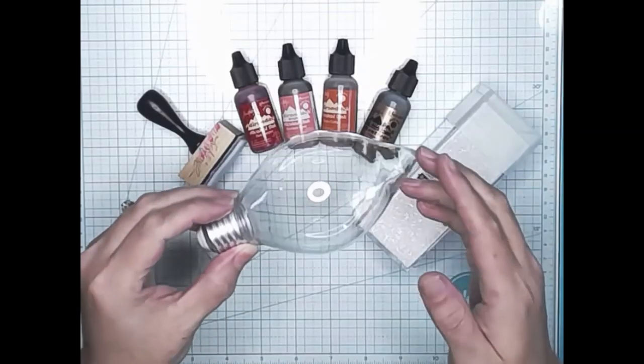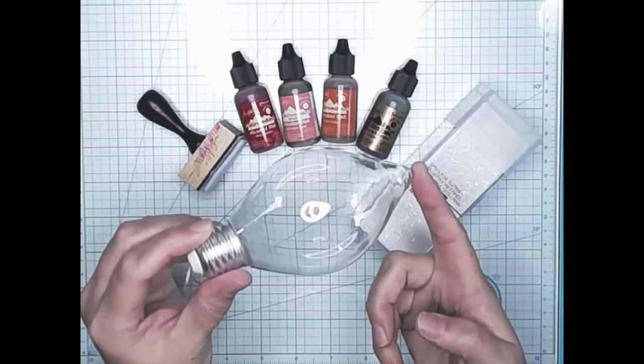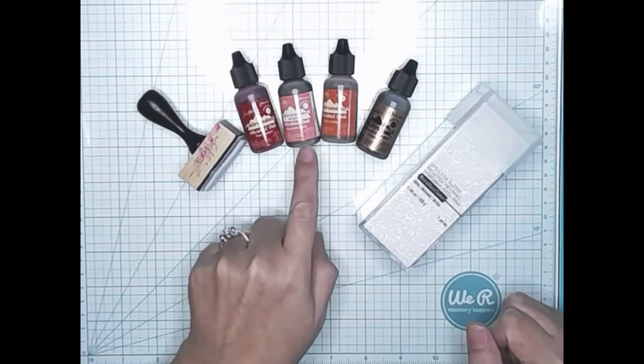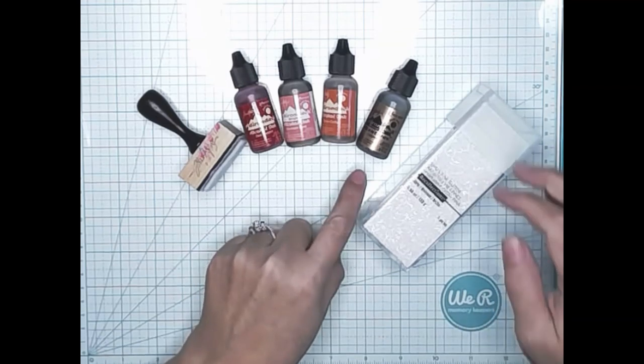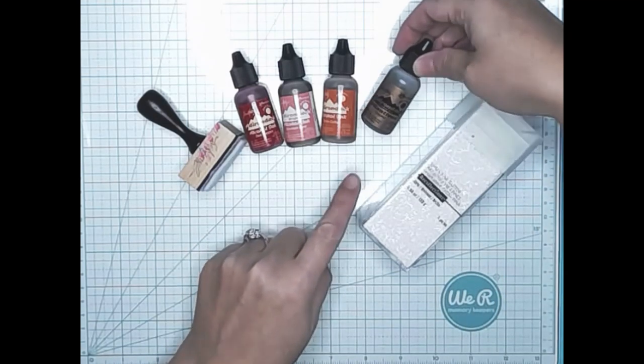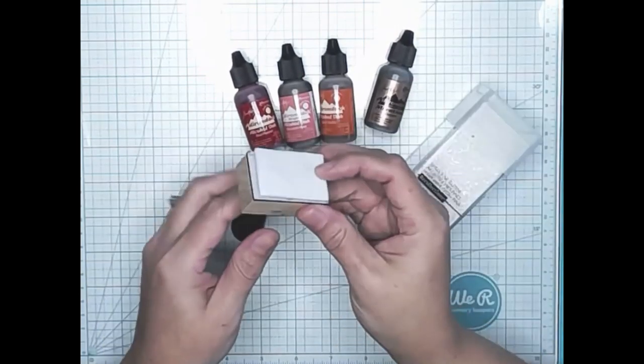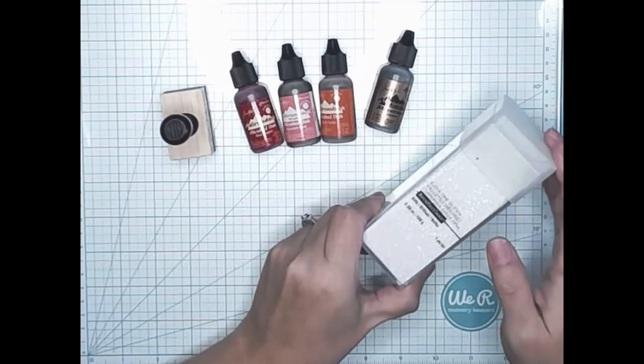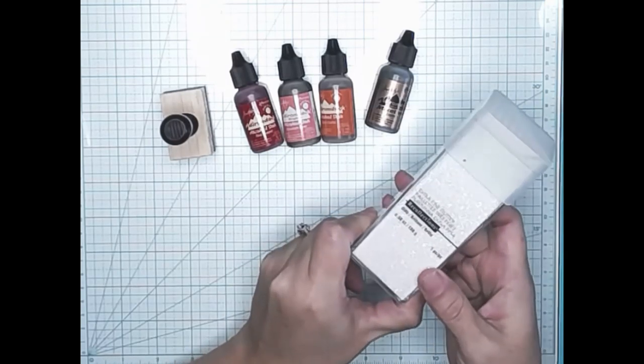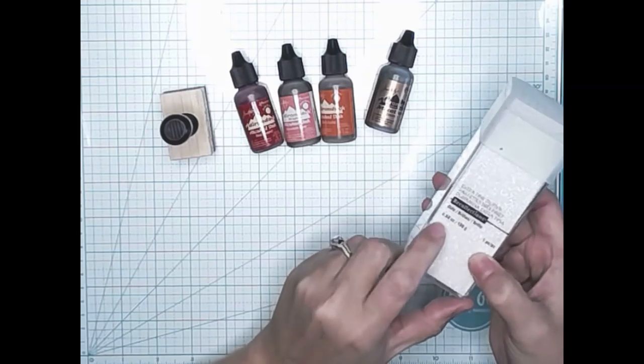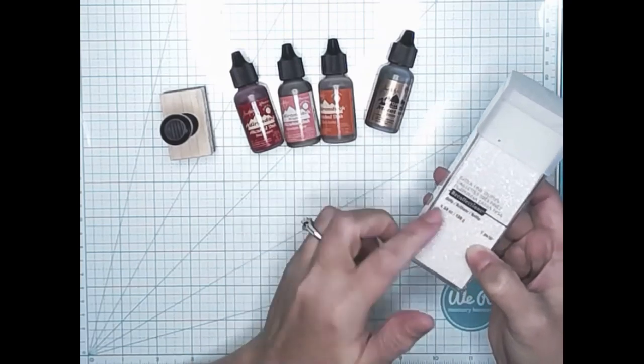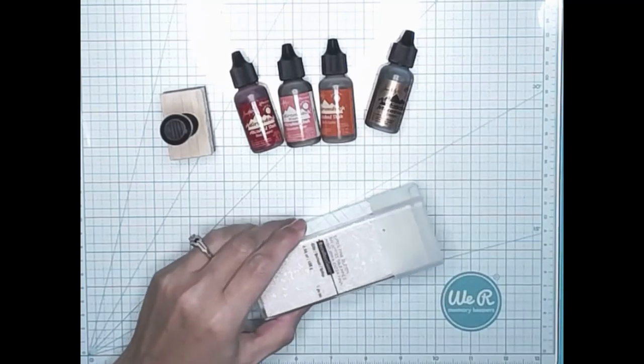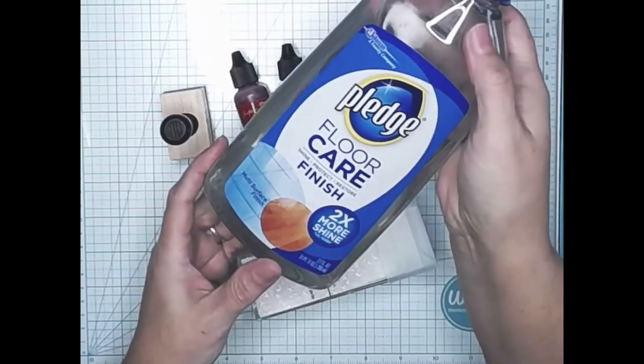For my first ornament, I'm going to be using this Dollar Tree bulb ornament. I'm going to be using four colors of alcohol ink. Here I have red pepper, mountain rose, terracotta, and then I have their metal mixatives in copper. I have my foam pad that I'll be applying the alcohol ink with, some extra fine glitter in white. It's actually called Glitz Brilliant, whatever you want to call it, from Recollections.